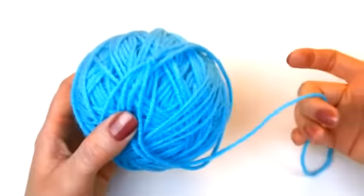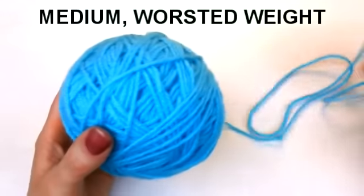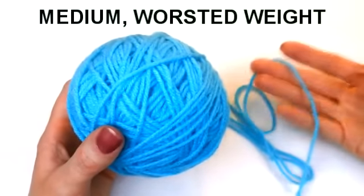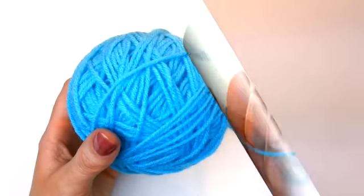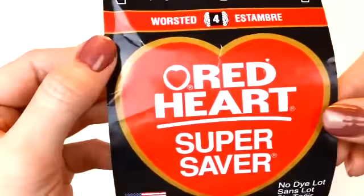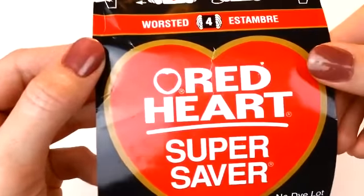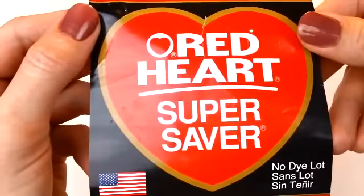For the type of yarn, go out and purchase a medium worsted weight yarn made of either acrylic or wool fibers. Now any brand should be fine, but if you're still unsure, go out and get Red Heart. I've always had really good luck using Red Heart, and it's super affordable and easy to work with.